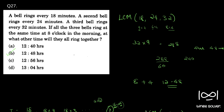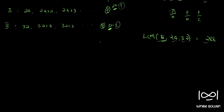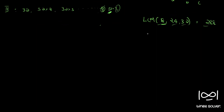Also, if you are not familiar with finding the LCM, say here for 18, 24, and 32 — we can just factorize it. So 18 is 3 into 3 into 2. And 24 is 6 into 4, which becomes 3 into 2 into 2 into 2. Similarly for 32, it is 2 into 2 into 2 into 2 into 2 — that is 2, 4, 8, 16, 32. This is how you factorize.